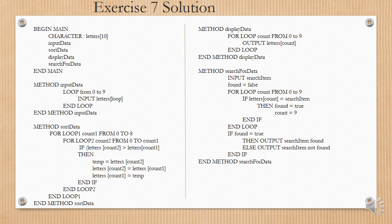Then method display data. We do a for loop count from 0 to 9, and output letters count. End loop. End method display data. Method search for data. We input the search item. Found equals false. We do a for loop count from 0 to 9. If letters count equals search item, then found equals true. Count equals 9, and end the if, then we end the loop. If found equals true, then output search item found, else output search item not found, and we end the if, and then we end the method search for data.